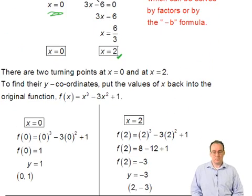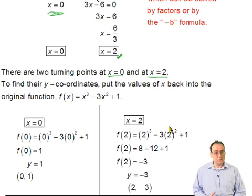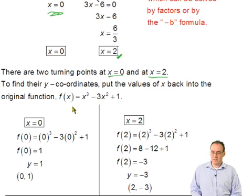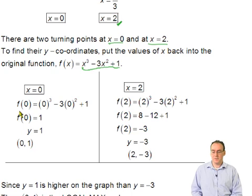There are therefore two turning points at x = 0 and x = 2. To find the y-coordinates, you put those values of x back into the y function, or back into f(x). In this case, y = x³ - 3x² + 1. So what you do is you put 0 back in, and you get f(0). And f(0) works out to be 1, which means there's a max or a min at (0,1).